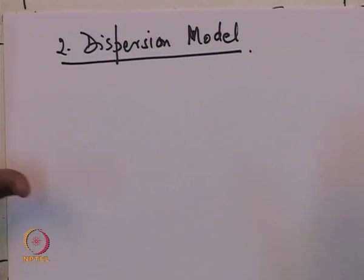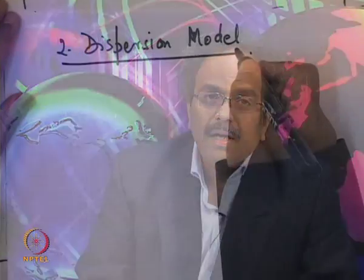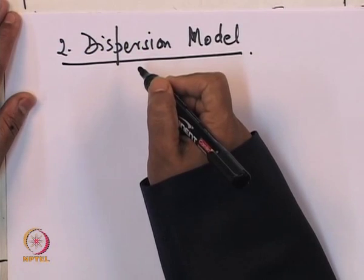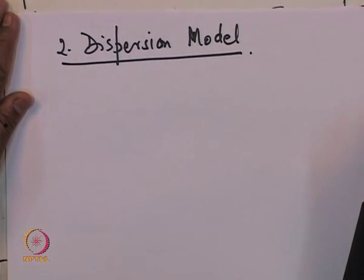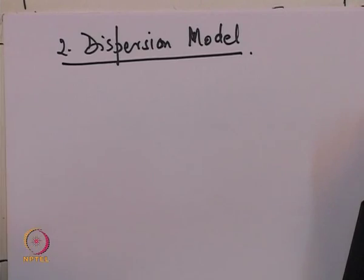Why do we have another model? It is convenient — sometimes some models work well and sometimes they do not. After discussing the dispersion model, we will spend some time relating these two models. Both models are popular in industry. In the dispersion model, dispersion is a synonym for axial mixing. Of course, it can be in the radial direction also, but for a tubular reactor we are talking about axial mixing — though radial can be clubbed in to get overall dispersion.